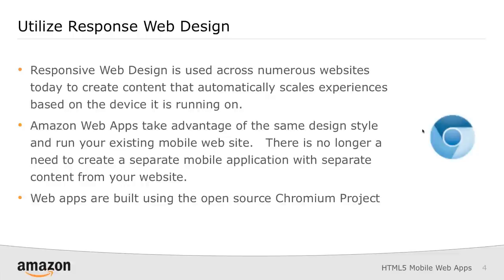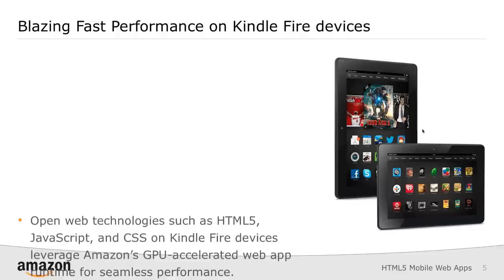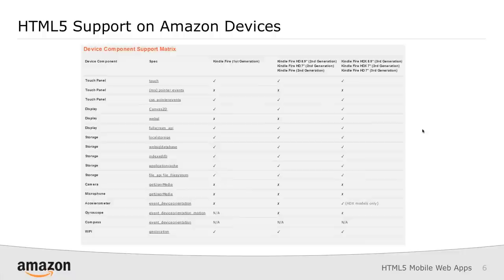All of the web apps you'll see me walk through today are built on the underlying foundation of the open source Chromium project — currently built on version 25. If you've been targeting anything through the Chromium project, that will just work when you're using web apps. Kindle Fire devices also have a runtime that allows JavaScript, HTML5, and CSS to be GPU accelerated. Whether you're using a Kindle Fire HD or HDX device, you're going to find that your applications have near-native speed.